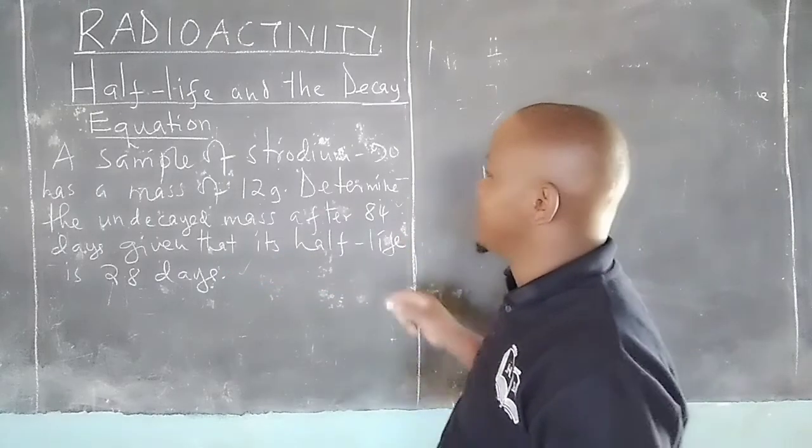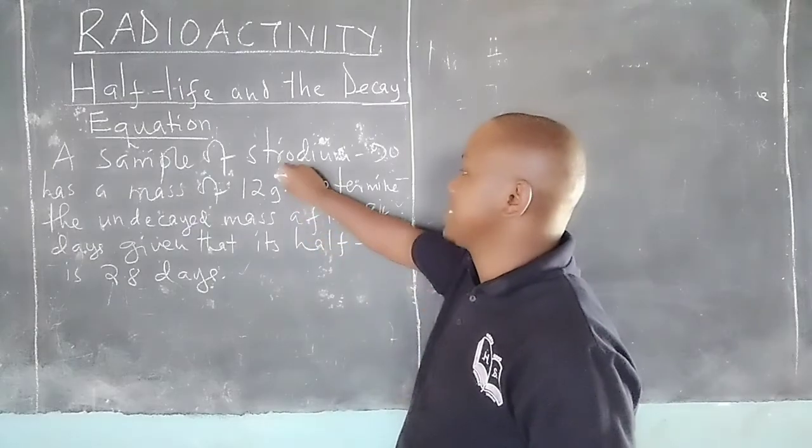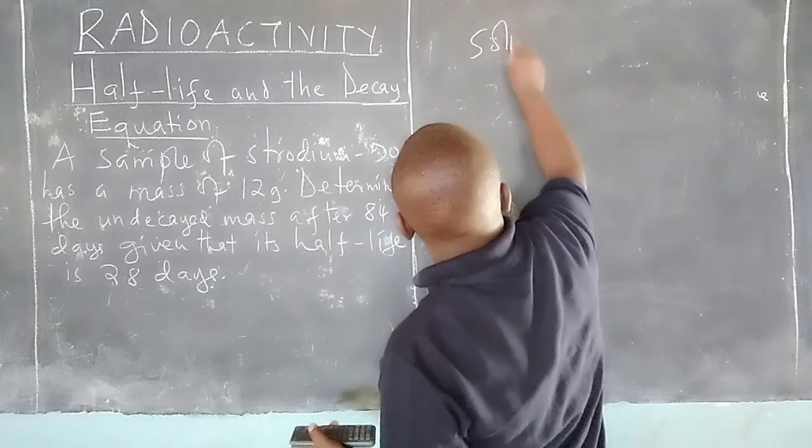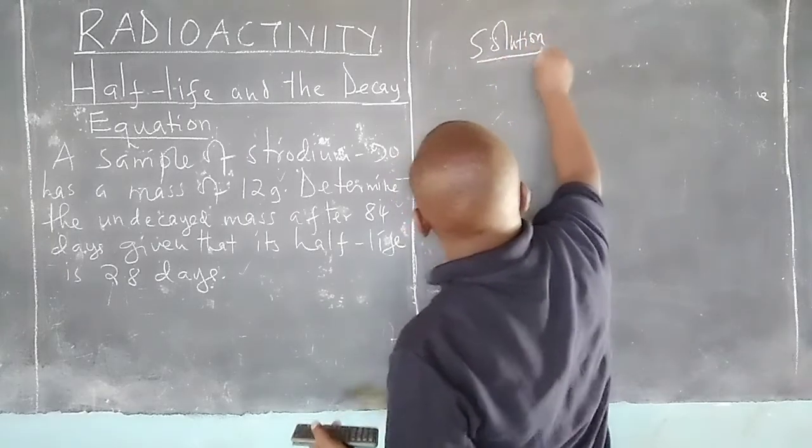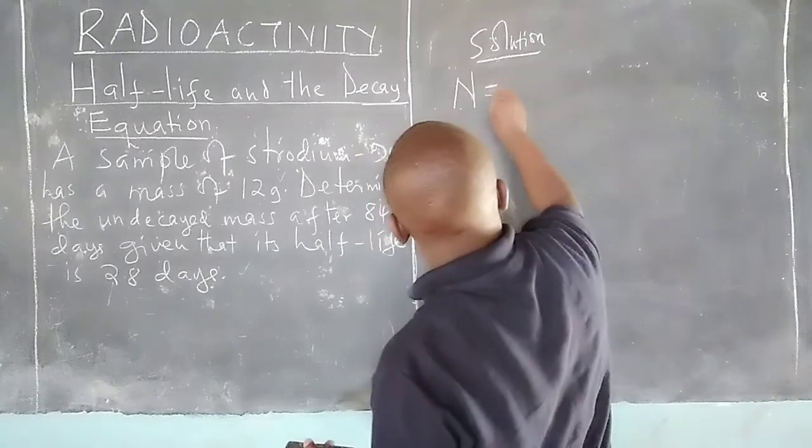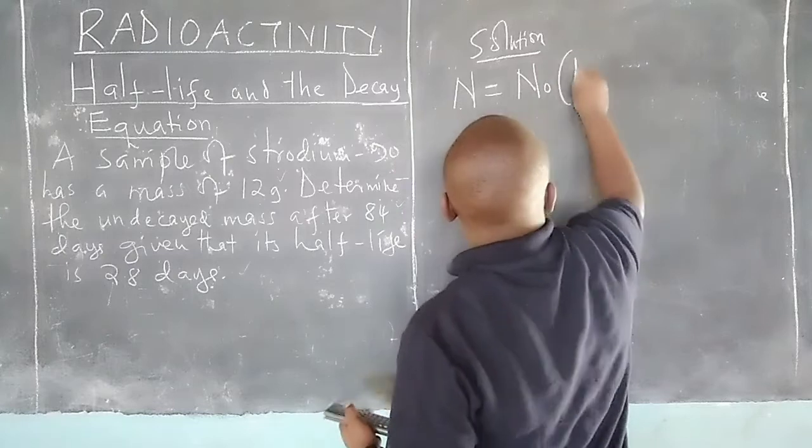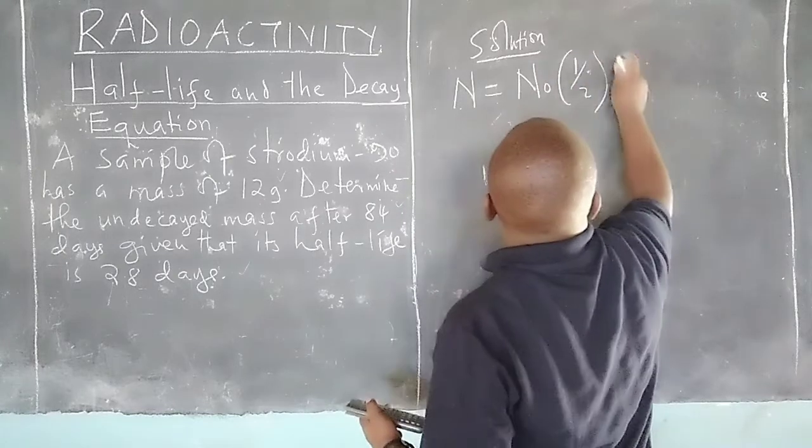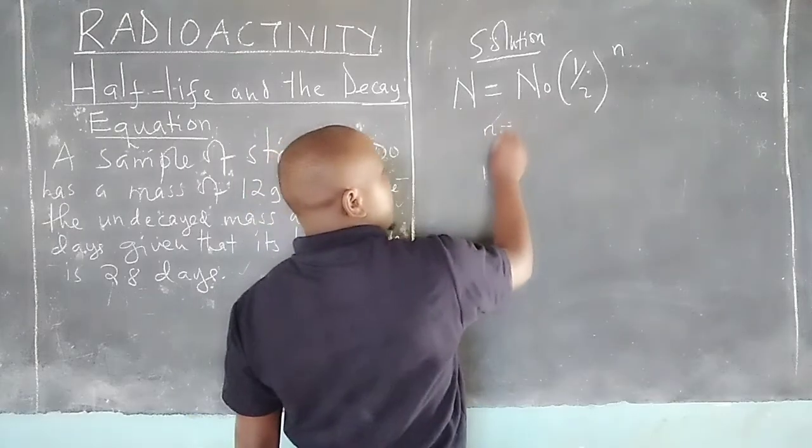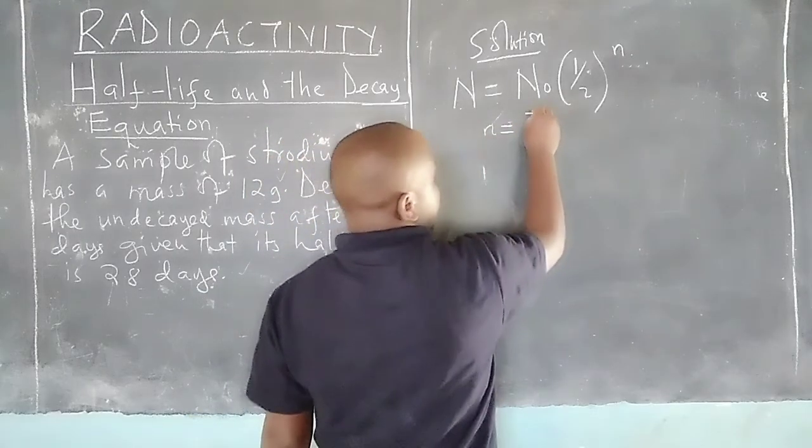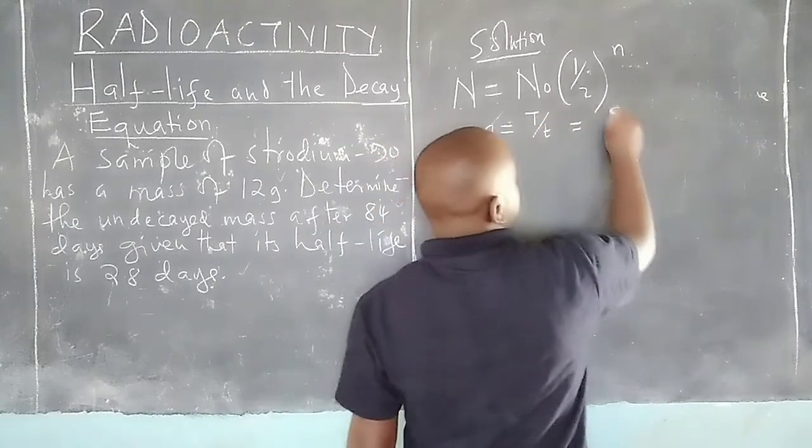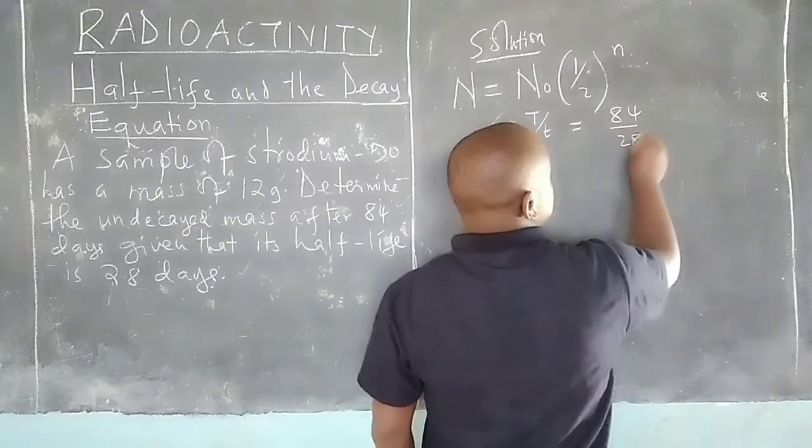To offer a solution, we usually say that the remaining mass will be the original mass times half raised to n. Small n is given by time divided by half-life. Therefore, we can get n = 84 days divided by 28, which gives us 3.